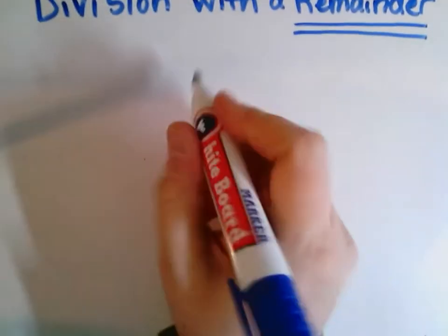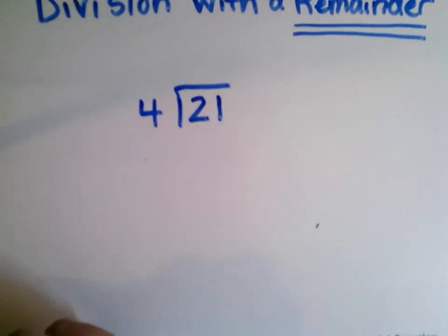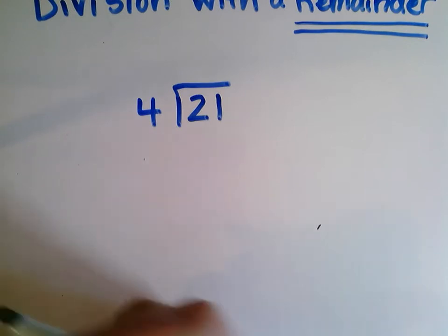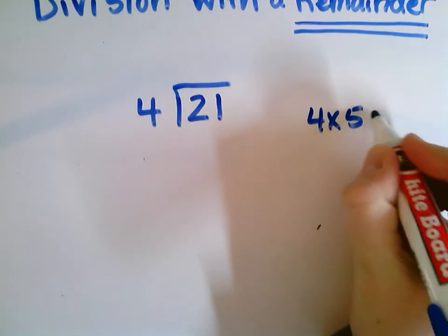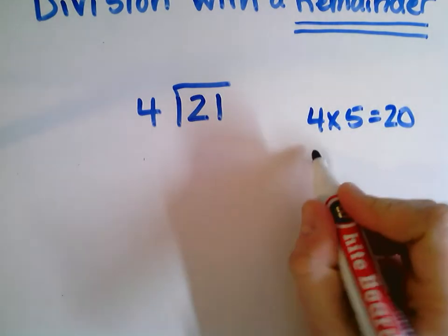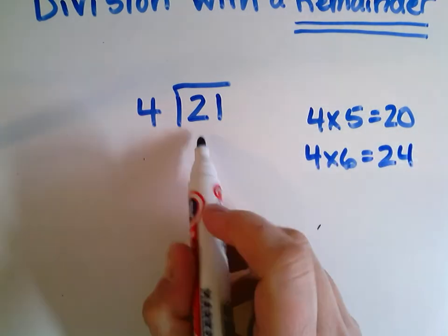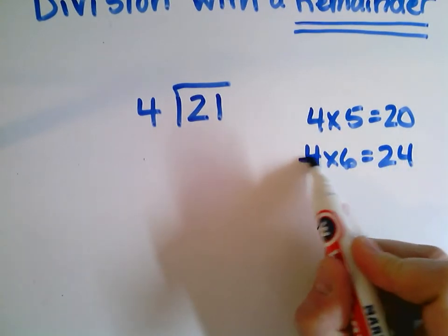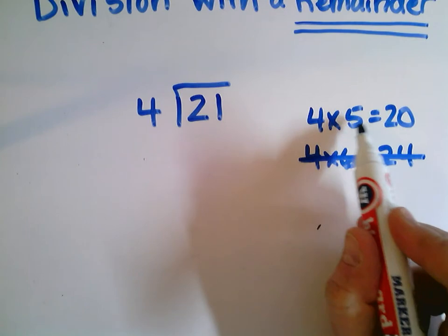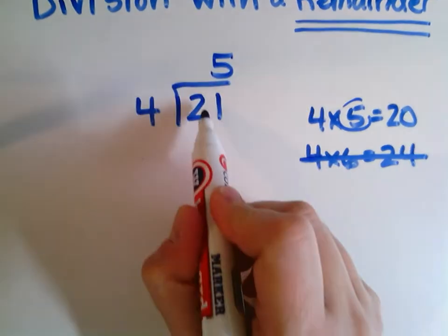Let's try one more problem. Let's do 21 divided by 4. I'm going to think to myself, what do I know about my multiples of 4 that will get me close to 21? Well, I know 4 times 5 equals 20, and I know 4 times 6 equals 24. But I only have 21 things — I can't take away 24 of them. So I can't use 4 times 6. 4 times 5 is the closest I can get to 21.